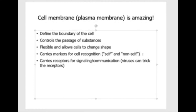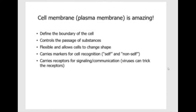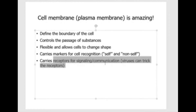Cell surface markers are also the basis for the rejection reaction when we do an organ transplant. The patient's body can recognize, using the cell markers, that the cells from the transplanted organ are not self cells, so it attacks them. The cell membrane also carries receptors for cell signaling and communication. Interestingly, this provides a mechanism for viruses to trick the cell and get inside to cause infection. We'll talk about that a little bit more later.